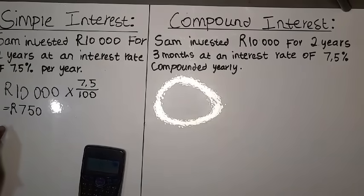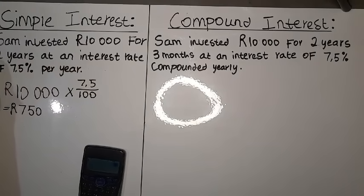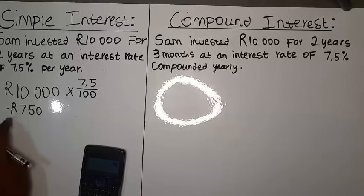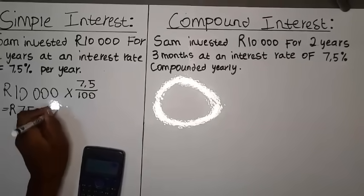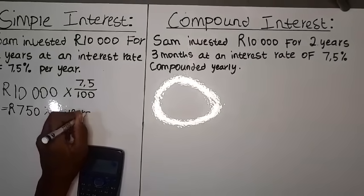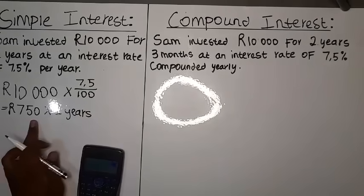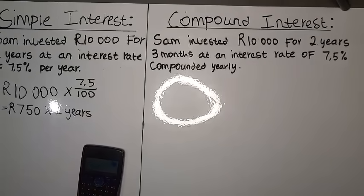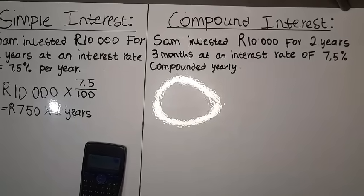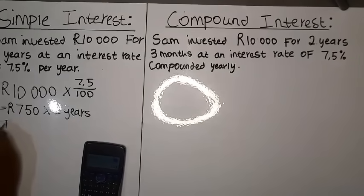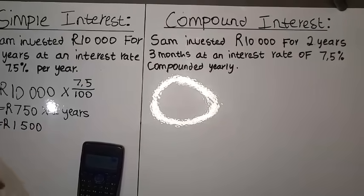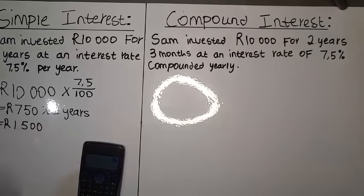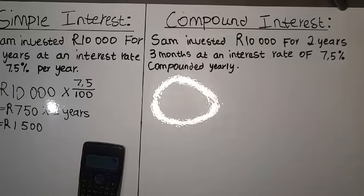Remember, in the scenario we were told Sam invested this amount for a period of two years. So you have to take the interest he's going to earn and multiply it by two years. It's 750 multiplied by two, which gives us a total of 1,500.